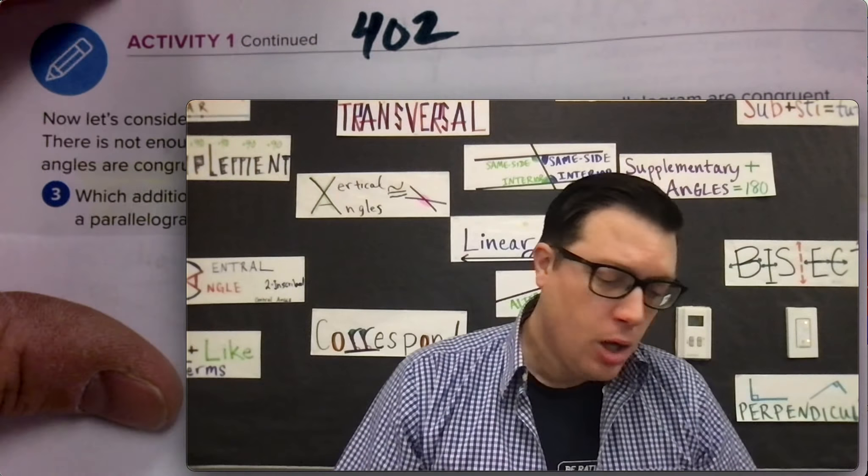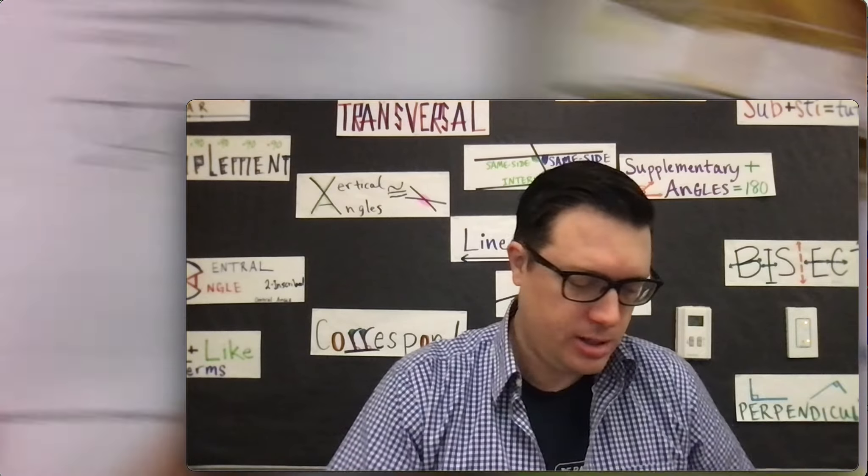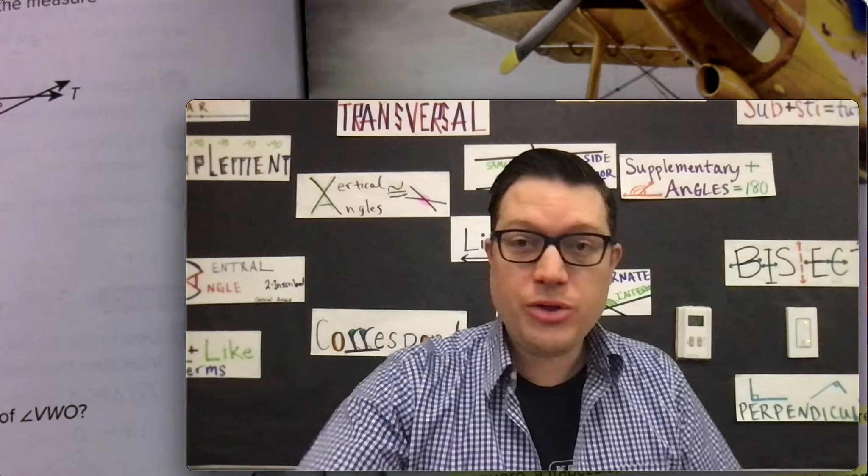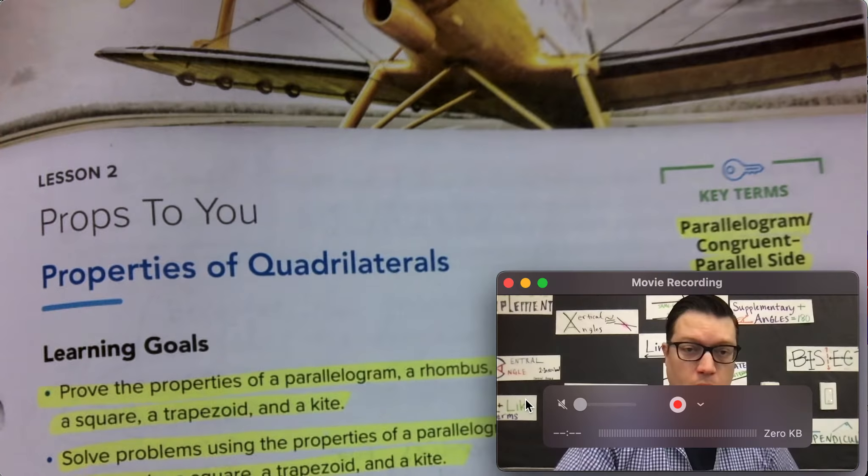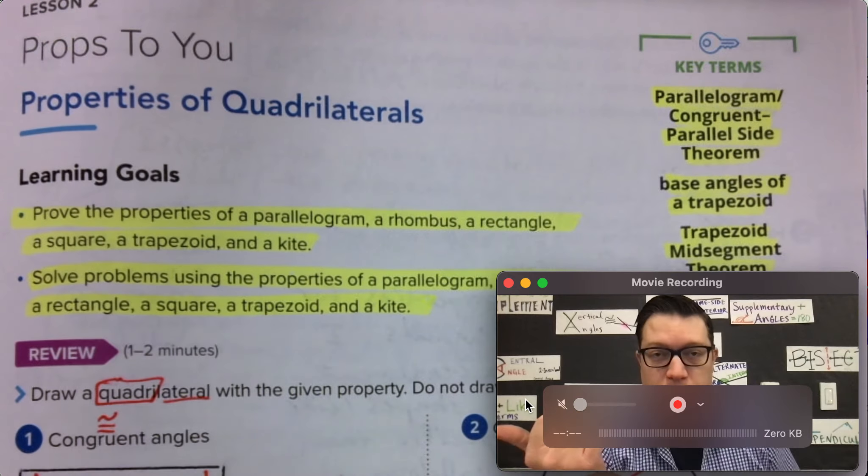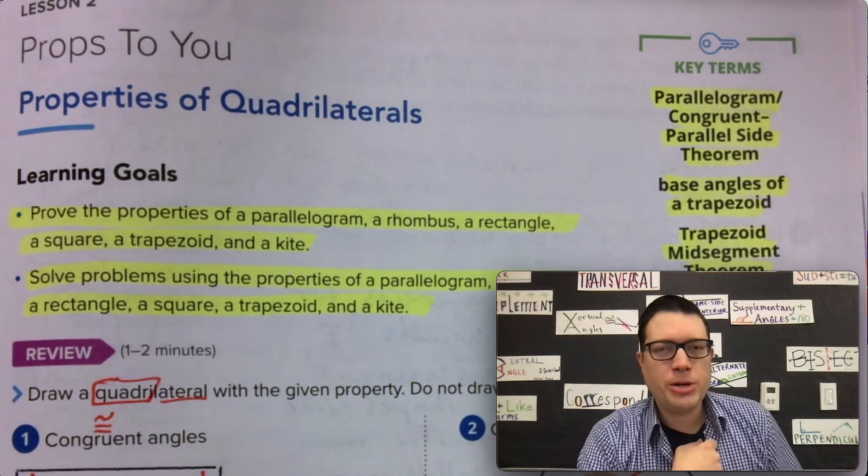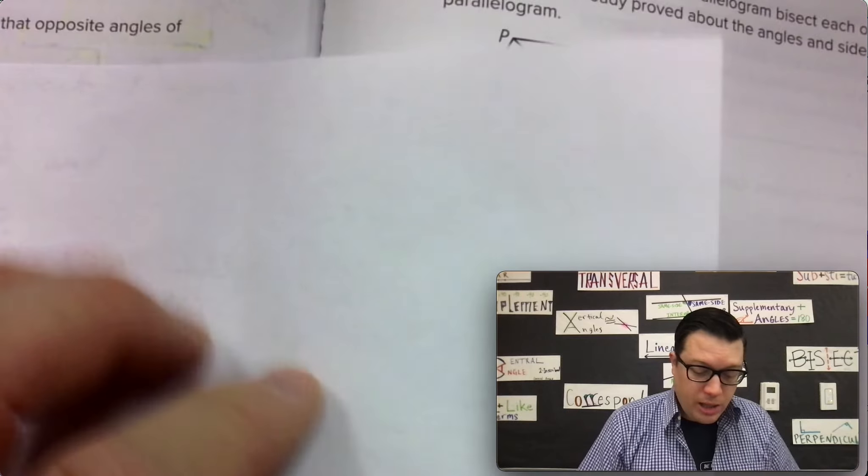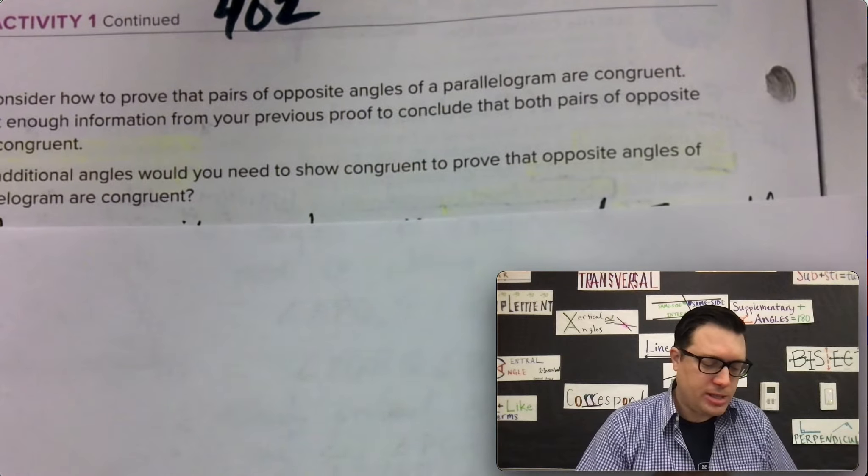We're going to continue activity one where we look at properties of quadrilaterals and come up with some sort of proof statements. This is directly related to our learning goals for our lesson. One of the learning goals is to prove the properties of a parallelogram, a rhombus, a rectangle, square, a trapezoid, and a kite. We're focusing on properties of parallelogram right now and it's also related to the work that was done on page 420 where we really try to put the characteristics into this flowchart diagram.